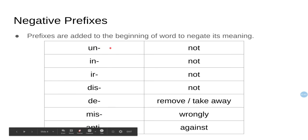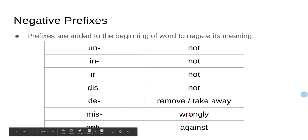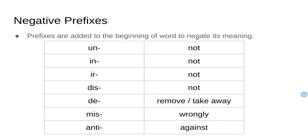Today we are going to learn about seven of these prefixes, plus one more that the book doesn't cover. We're going to learn: 'un-' meaning not, 'in-' meaning not, 'ir-' meaning not, 'im-' meaning not, 'de-' meaning remove or take away, 'mis-' meaning wrongly, and 'anti-' meaning against. These prefixes are added at the beginning of a word to negate its meaning.